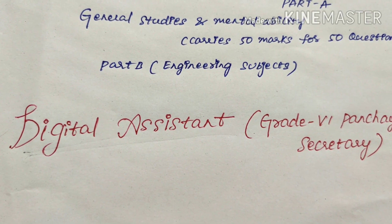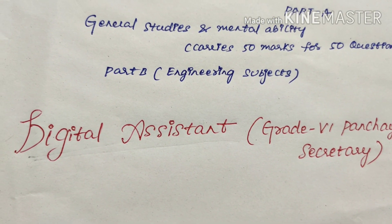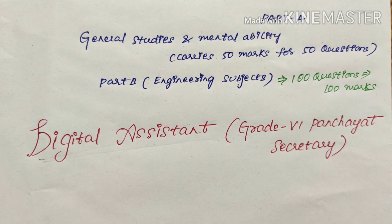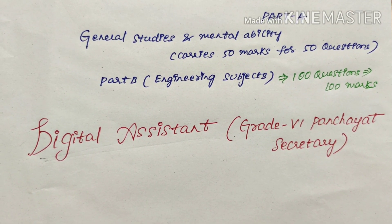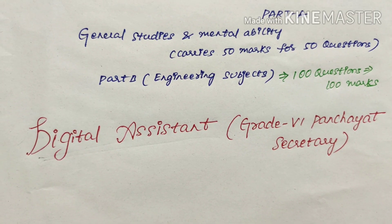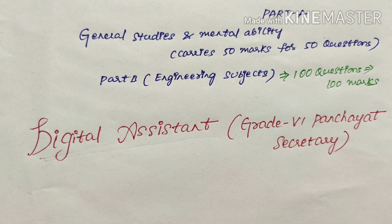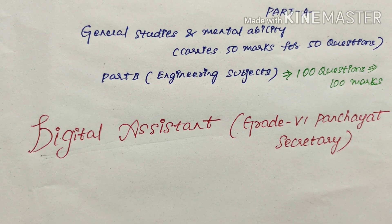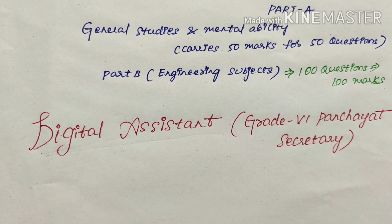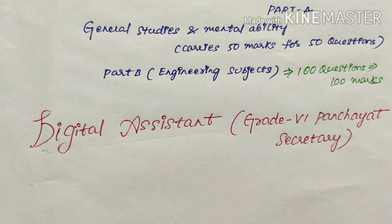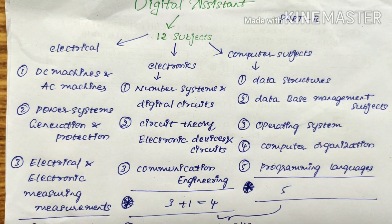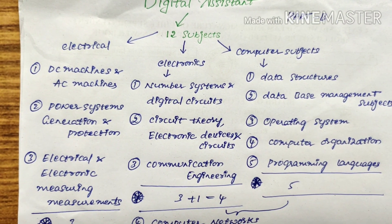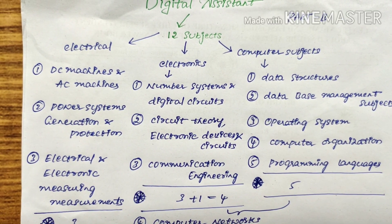Coming to the marks: Part A carries 50 marks for 50 questions, whereas Part B carries 100 questions with 100 marks. For a right answer it is plus one, and for a wrong answer it is minus one-fourth. In Part B of this Digital Assistant examination, 12 subjects are given.